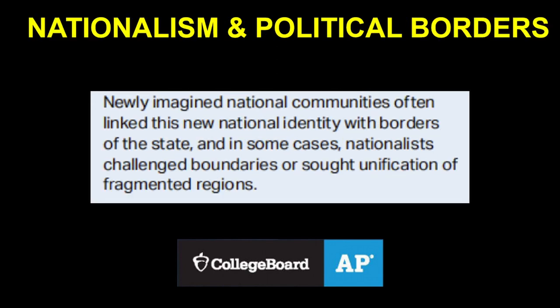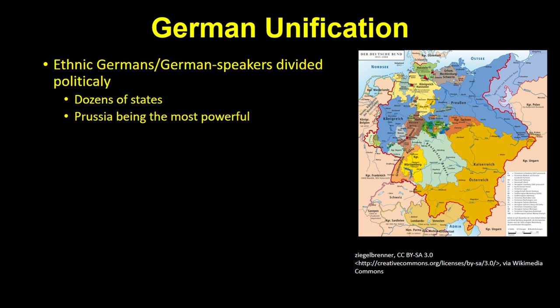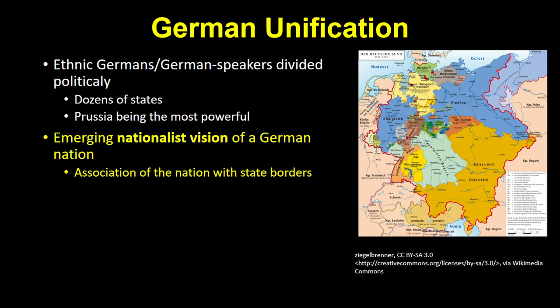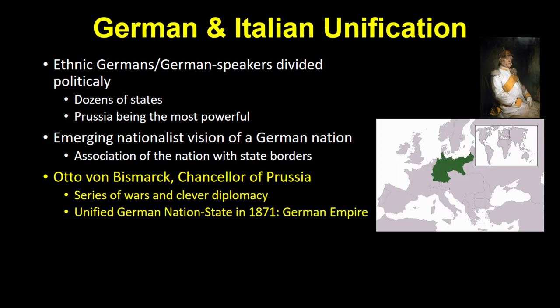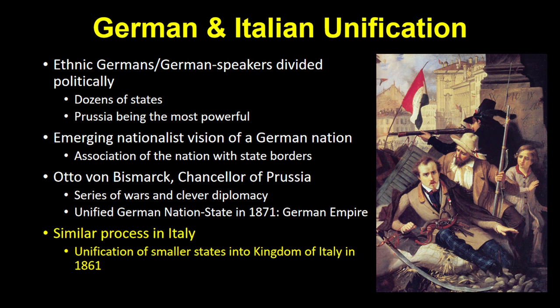Newly imagined national communities often linked national identity with the borders of the state, and sometimes nationalists challenged boundaries or sought unification of fragmented regions. Ethnic Germans had been separated into dozens of states, the most powerful being Prussia. Otto von Bismarck, chancellor of Prussia, through wars and clever diplomacy, turned this nationalist vision into reality in 1871 with a unified German nation-state called the German Empire. A similar process occurred slightly earlier in Italy, which united smaller Italian states into the Kingdom of Italy in 1861.